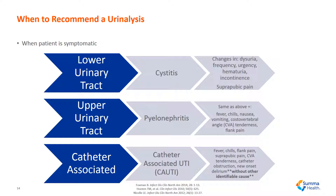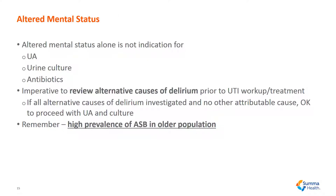So when should you order a urinalysis? When the patient is symptomatic or has any of the symptoms listed on the right-hand side of the screen. Altered mental status alone is not an indication for urinalysis, urine culture, or antibiotics. It's imperative to review alternative causes of delirium prior to UTI workup and treatment. If all other causes of delirium have been investigated and no other attributable cause has been found, then at that point it is okay to proceed with a urinalysis and culture. The takeaway here is that there is a high prevalence of asymptomatic bacteria in the older population.